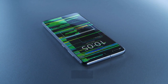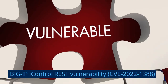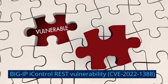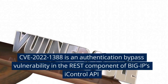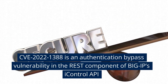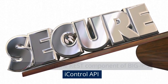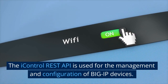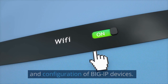Vulnerability number four — BIG-IP iControl REST, CVE-2022-1388. CVE-2022-1388 is an authentication bypass vulnerability in the REST component of BIG-IP's iControl API. The iControl REST API is used for the management and configuration of BIG-IP devices.